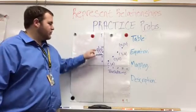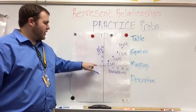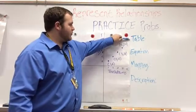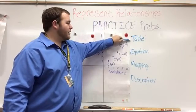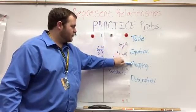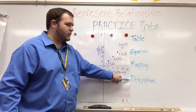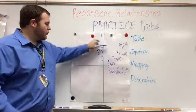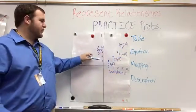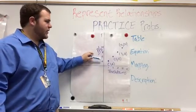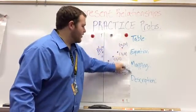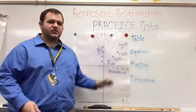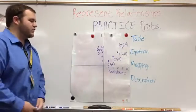What I want you to do is write this graph down, and then using the graph, come up with the table, and then use that table to come up with your equation, and then do your mapping and then the description. So make a little rough sketch of this. It doesn't have to be perfect on the graph. That's why I gave it to you first. And then come up with the other four representations using the graph. I'll give you all a second just to write this down.